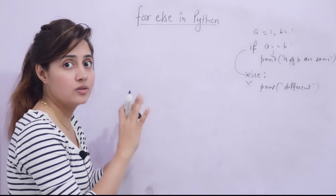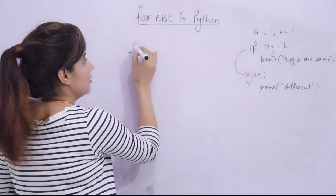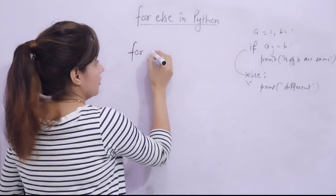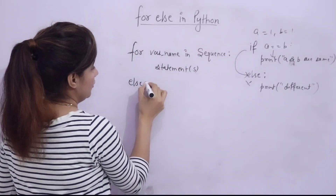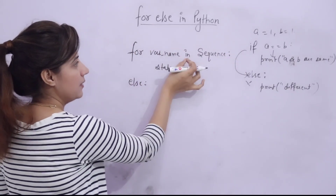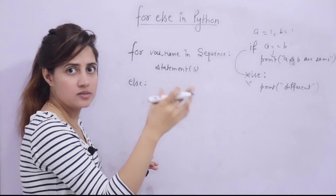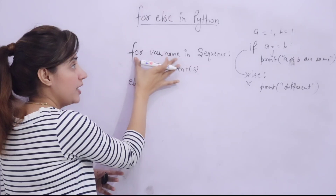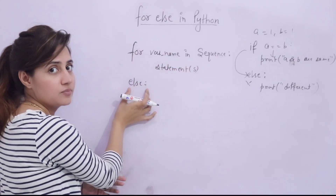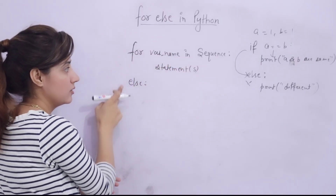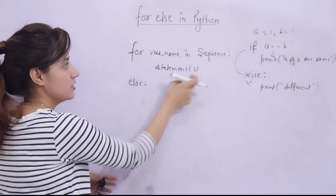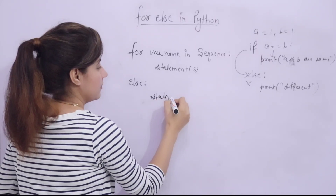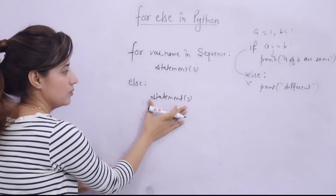Now let's see the syntax of for-else. You already know the for loop syntax from the previous video. We write: 'for variable in sequence' — sequences like list, tuple, set, dictionary, or string — then one or more statements. After the loop body, we write else at the same indentation level as for (not indented), followed by the else block statements.